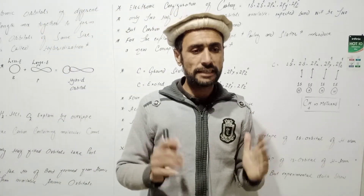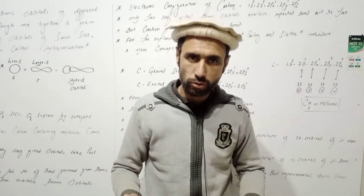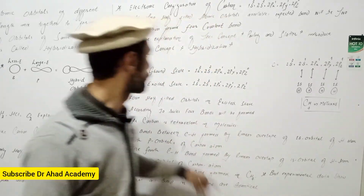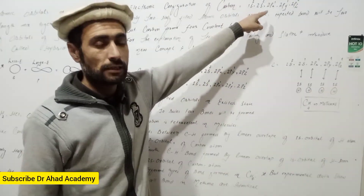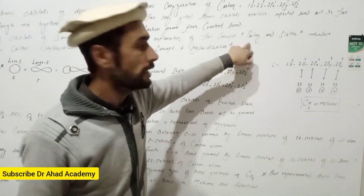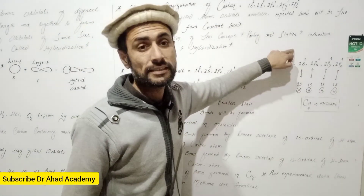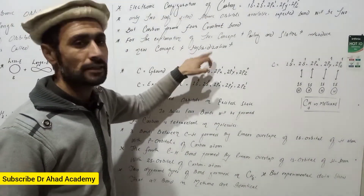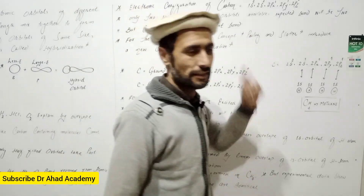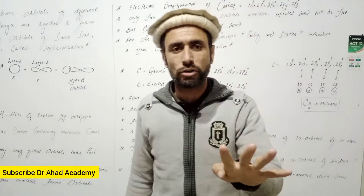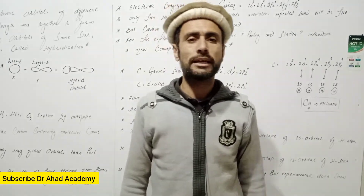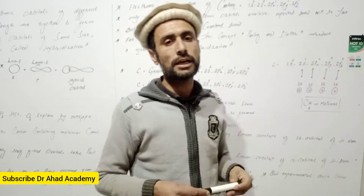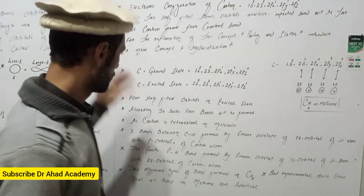To explain this concept, Pauling and Slater introduced a new concept called hybridization. This concept explains why carbon and other atoms form the number of bonds they actually do — beyond what VBT alone predicts.